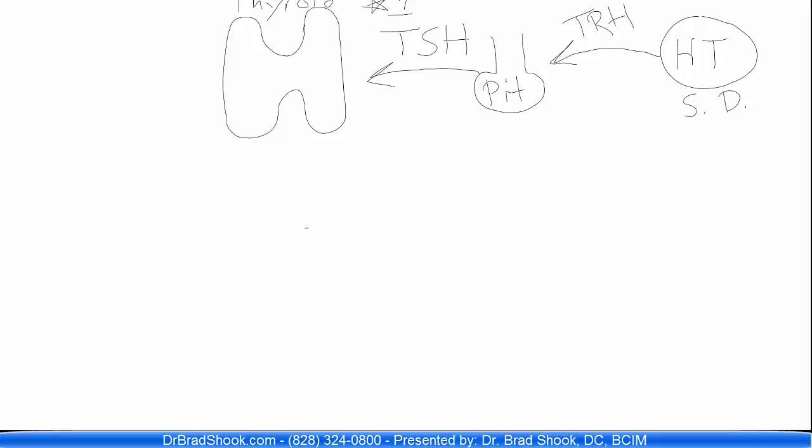TSH stimulates the thyroid gland to produce and increase its production of TPO, or thyroid peroxidase. Thyroid peroxidase is an enzyme inside the thyroid gland. When it increases activity, you have an increase in thyroid hormone production. Your thyroid gland will then produce T3 and T4. Of the hormone made by the thyroid gland, 7% is T3 and 93% is T4. So the predominant amount of hormone produced by the thyroid is T4.